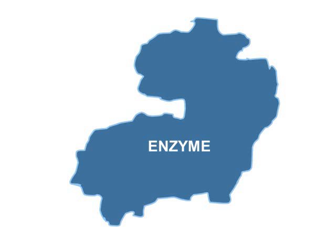If you look at this particular protein's complex shape, you should spot an area in the middle of the protein that just looks like it's begging for something to be plugged in there. That's called the active site. If an enzyme is going to speed up a chemical reaction, it's got to have some point where it physically engages with the chemical reactants — that's what the active site is. In an enzyme-driven reaction, the reactants are called the substrate of the enzyme.